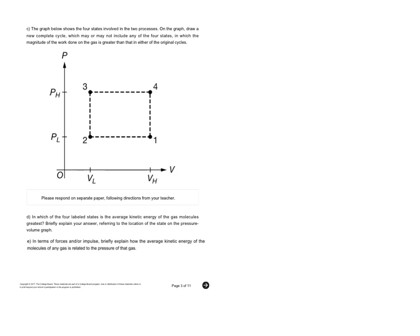So question C is asking, draw a new cycle, and in this one you want the work done to be greater. So that's the key, you want it to be greater. So you could draw anything here, you just got to make sure that the area that's enclosed is greater than what they have there. So it doesn't have to be like a formal process, like isobaric, isochoric, whatever. I mean you could literally just do this, and you would be good to go, as long as the area enclosed is larger for one than the other.